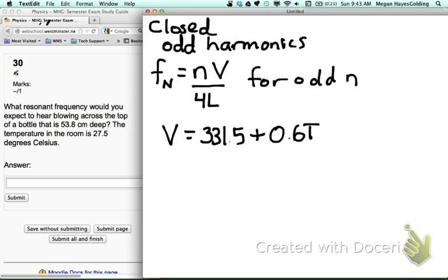The problem with this problem is getting to this relationship. You need to realize that a bottle has a closed end. You need to realize that closed-tube resonators only resonate at the odd harmonics, and you need to remember the formula. There's a lot that goes into that.